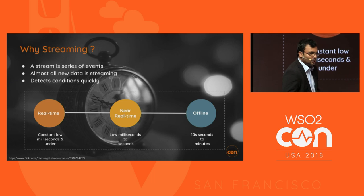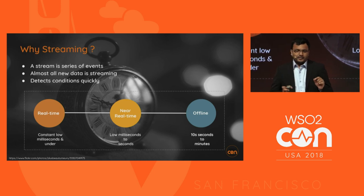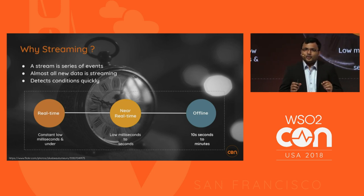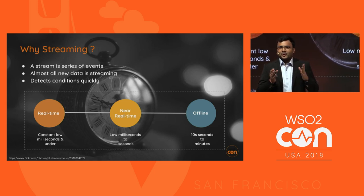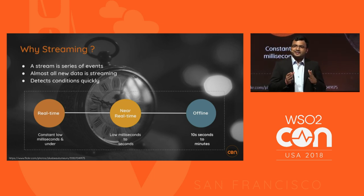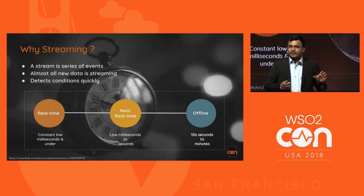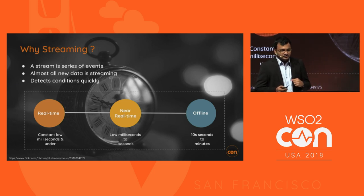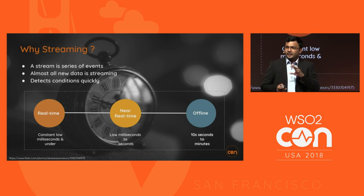I don't want to go into what streaming or streaming data means — Suho and Wanji already covered that. The most important characteristic in streaming is the time taken to make a decision, or how quickly we can detect a condition. Based on that, we can divide it into three phases: real-time, near-real-time, and offline. Streaming mainly falls under the real-time and near-real-time categories, and those are the most important factors.